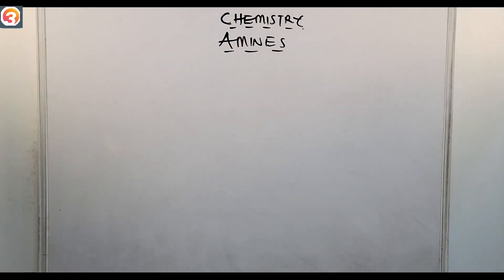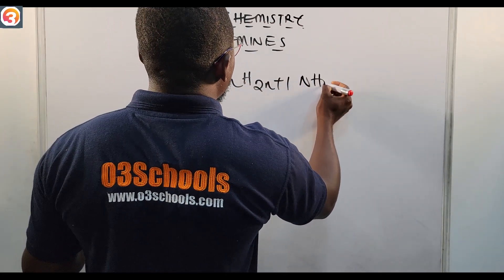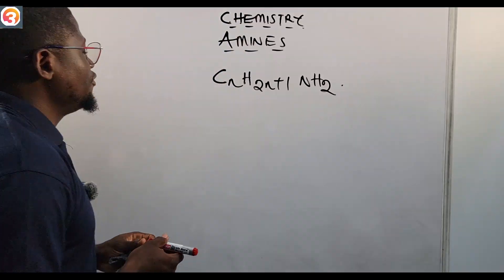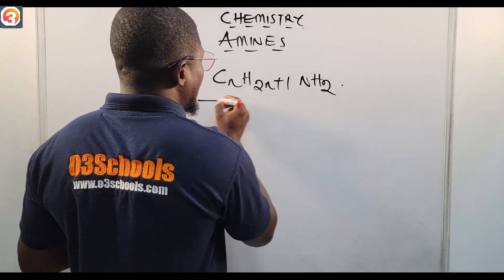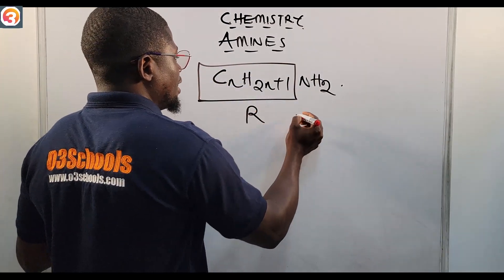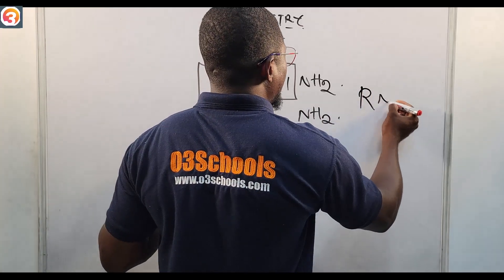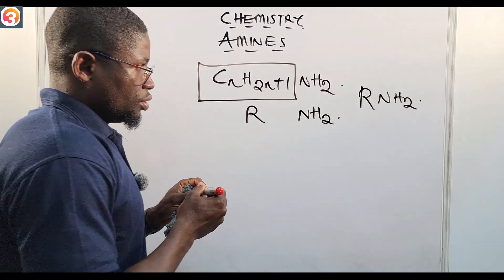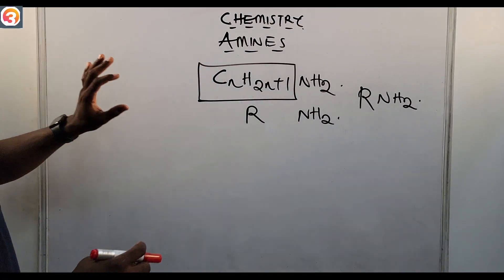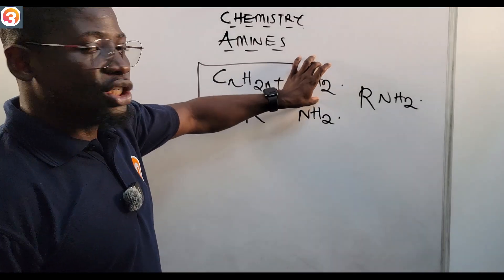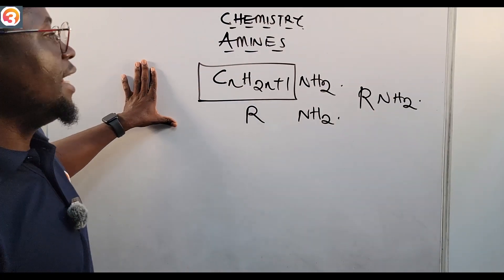Let us go to the board and talk about amines. Amines have the general formula CₙH₂ₙ₊₁NH₂, which can also be written as R-NH₂, where R represents the alkyl group. This is the general formula for amines.